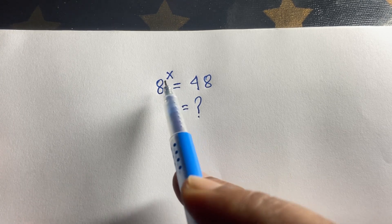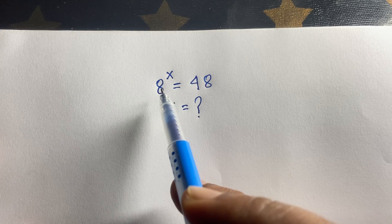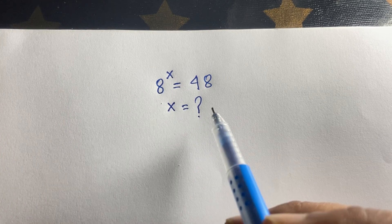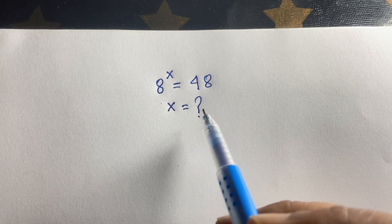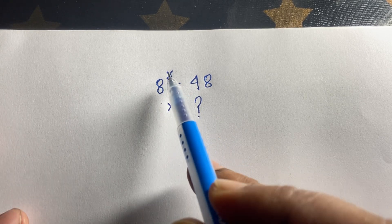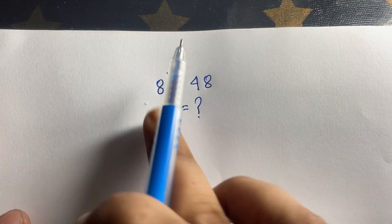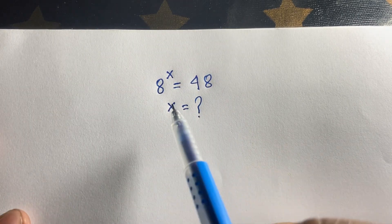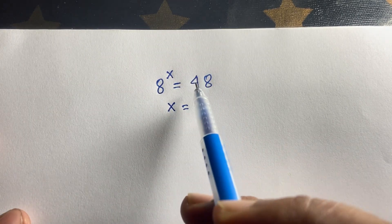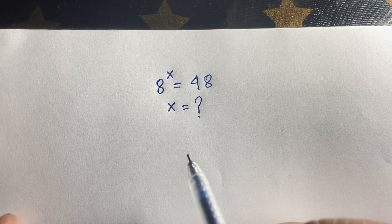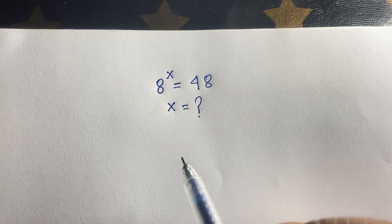If you think x is equal to 1, then 8 to the power 1 is 8 — it is not equal to 48. And if you think 8 to the power 2, that will be 64, but here we have 48, so it is not equal. So how to solve this question?